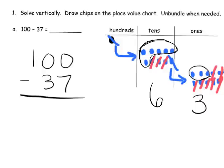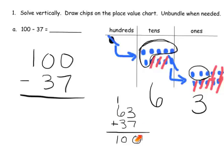One idea would be: how do we know if we're right? Well, we can use fact families. Take sixty-three and add thirty-seven to make sure we end up with a hundred — and sure enough, we do. So it's a good idea to teach students to use addition to check their subtraction problem.